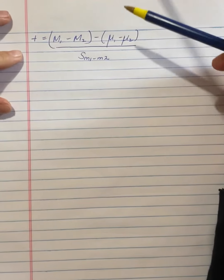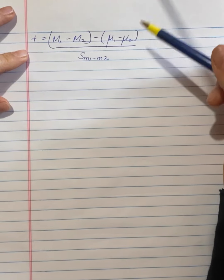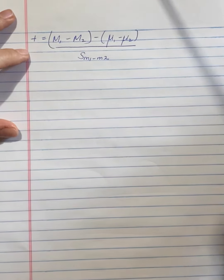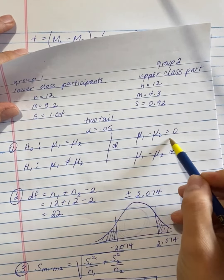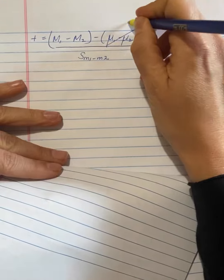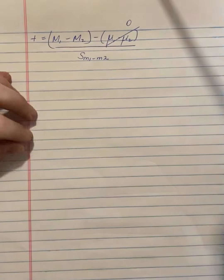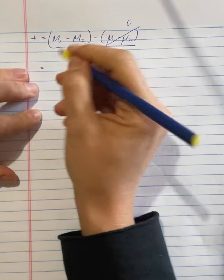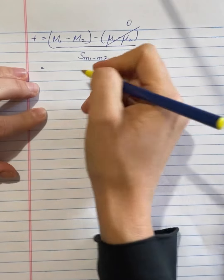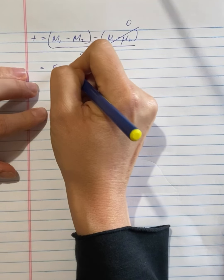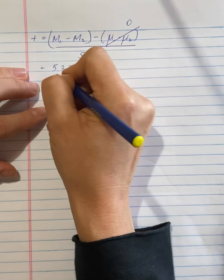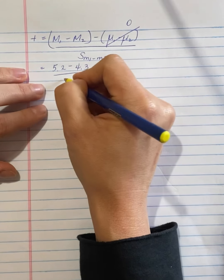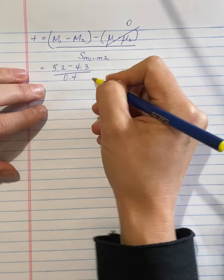What we now need to do is calculate the t. So if you recall, mu1 minus mu2, according to the null hypothesis, is 0. So that zeros out. The mean of group 1 was 5.2. The mean of group 2 was 4.3. And the estimated standard error that we just calculated was 0.4.